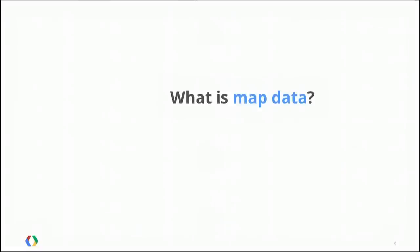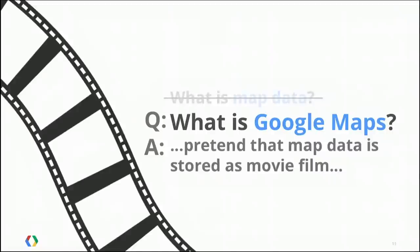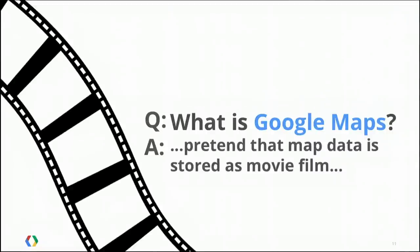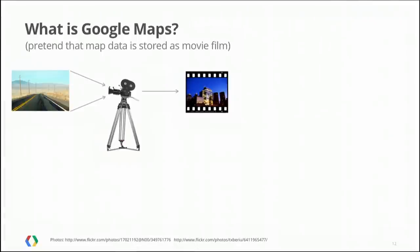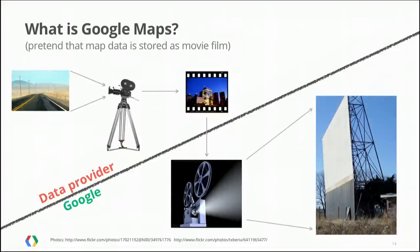There's a bigger question: what is Google Maps? To answer that, let's pretend map data is stored as movie film. The way Google Maps has traditionally displayed map data, we had a data provider who went and took measurements of the world using — through the analogy — a movie camera, created that film, and then tossed it over a line to us. So there's the data provider on one side and Google on the other. We project it onto a screen — your phone or laptop.